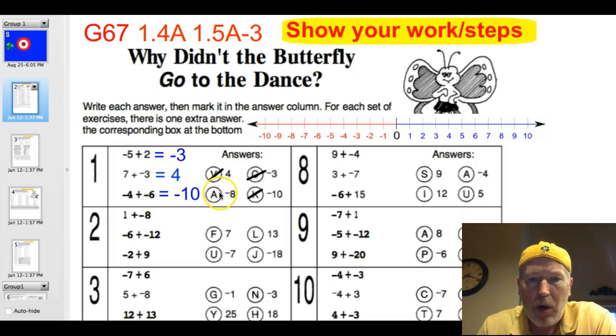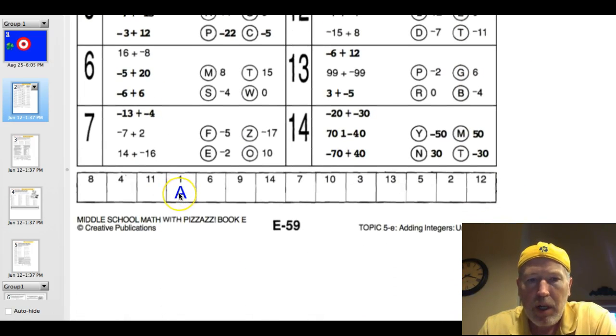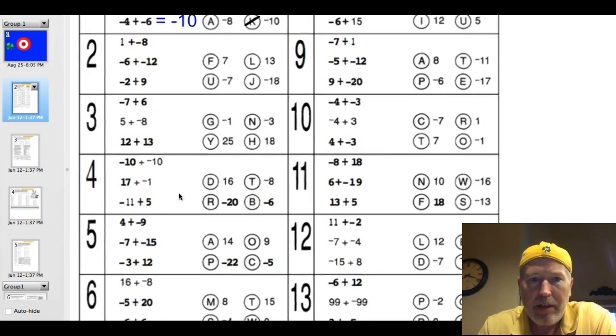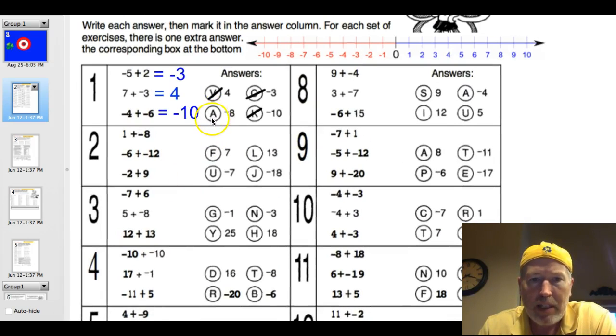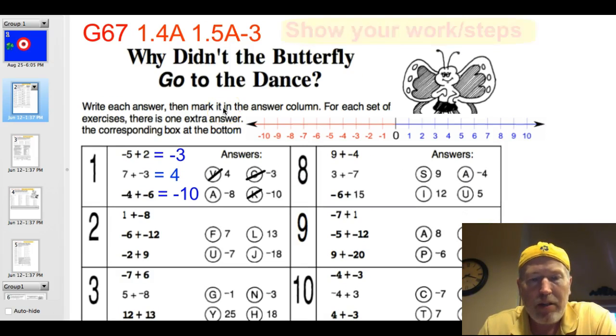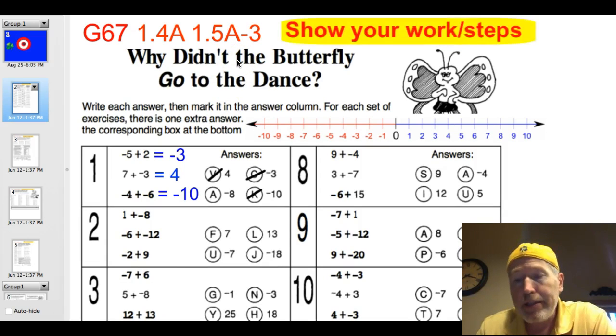Once you cross them all out, you'll be left with one answer that's remaining. You go down and you find number 1 because this is question 1, and then you fill in an A for question 1. That's the letter that's remaining. And there's a 1 in 50 chance that this will actually make sense or be funny when you solve this riddle.